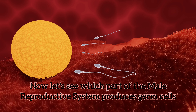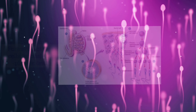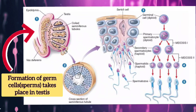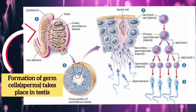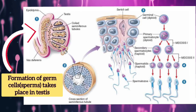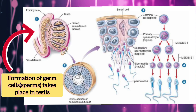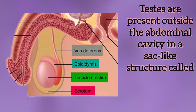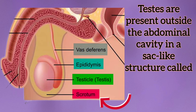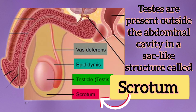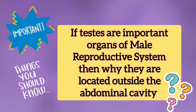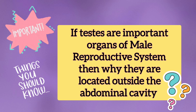The formation of germ cells or sperms takes place in the testes. Testes are present outside the abdominal cavity in a sac-like structure called the scrotum. If testes are important organs of the male reproductive system, then why are they located outside the abdominal cavity?